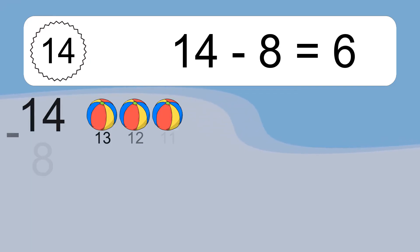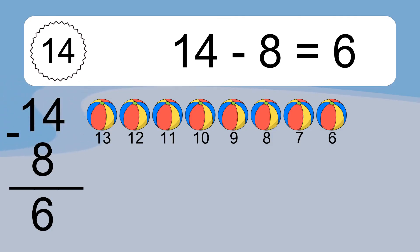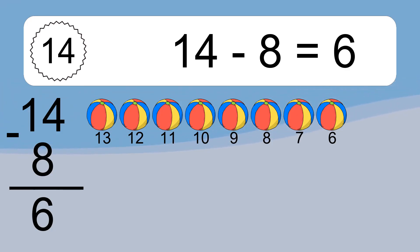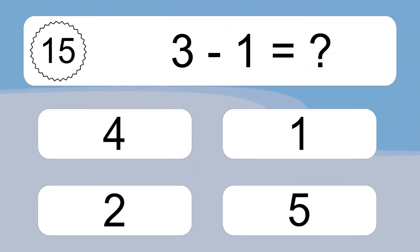14 minus 8 equals what? 14 minus 8 equals 6. Let's count it. 13, 12, 11, 10, 9, 8, 7, 6. 3 minus 1 equals what?